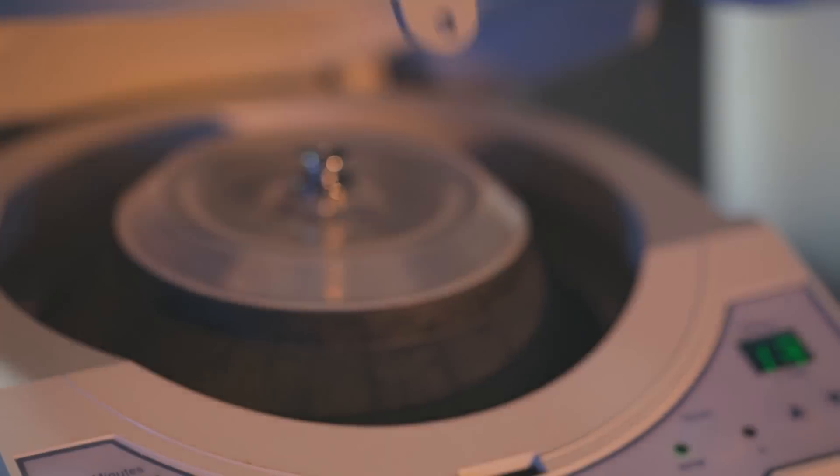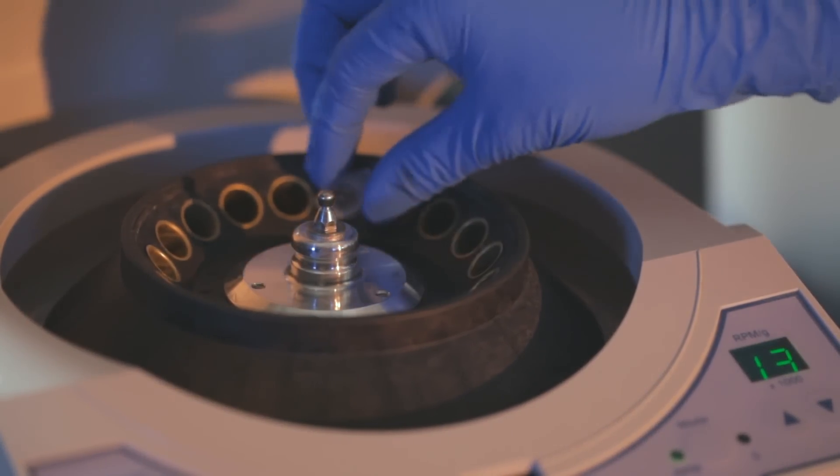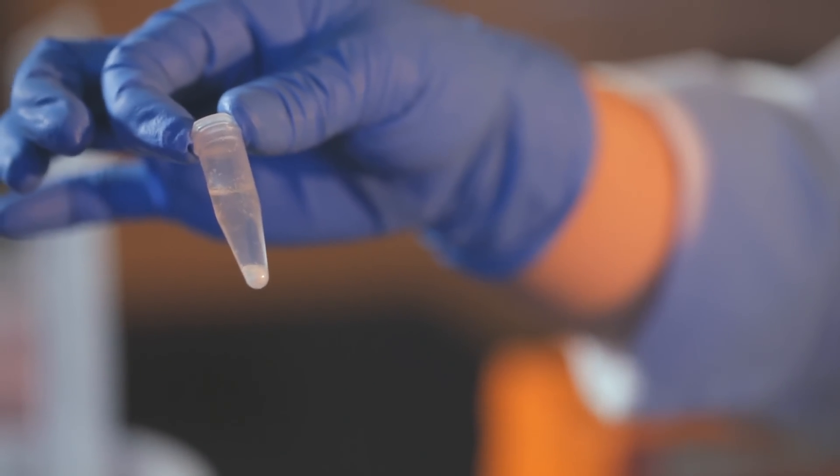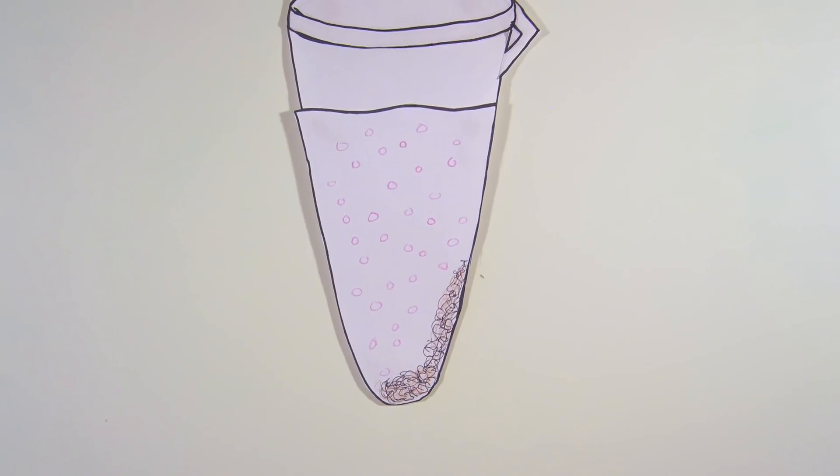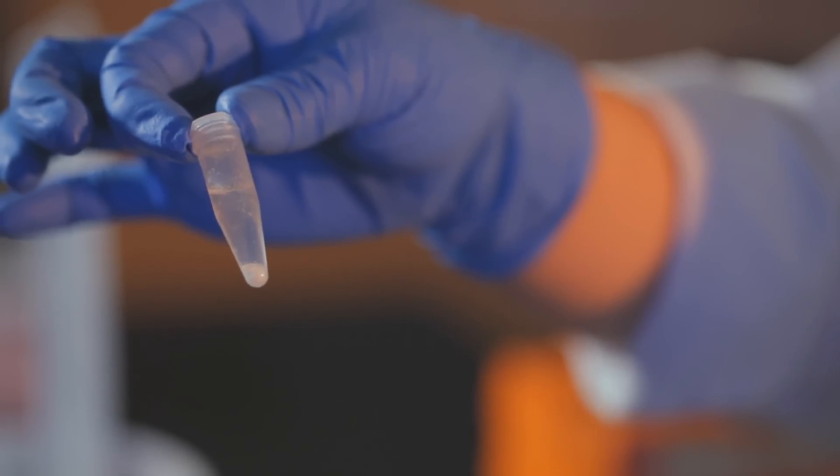After 10 minutes, a white pellet should appear at the bottom and side of the microfuge tube. This pellet consists of the proteins, lipids, and genomic DNA that precipitated out when you added the neutralization buffer. The plasmid DNA that you want is still in solution in the supernatant. The supernatant is what you want to keep.